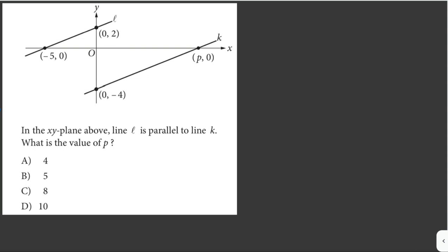We're given this illustration here in the xy plane above, line L is parallel to line K. What is the value of P? So since lines L and K are parallel, then the two lines have the same slope.